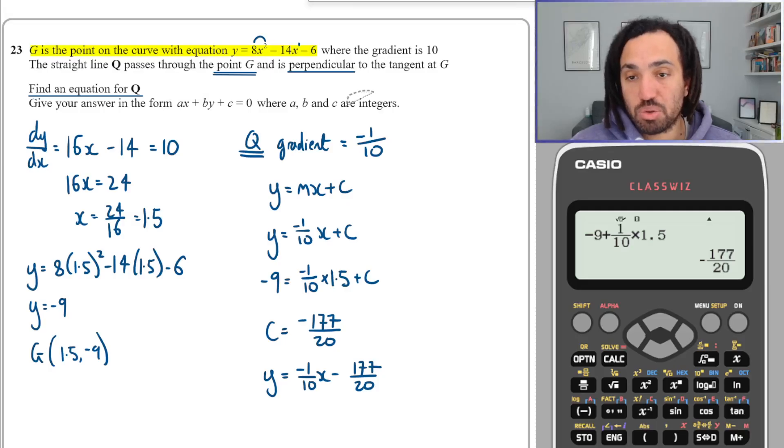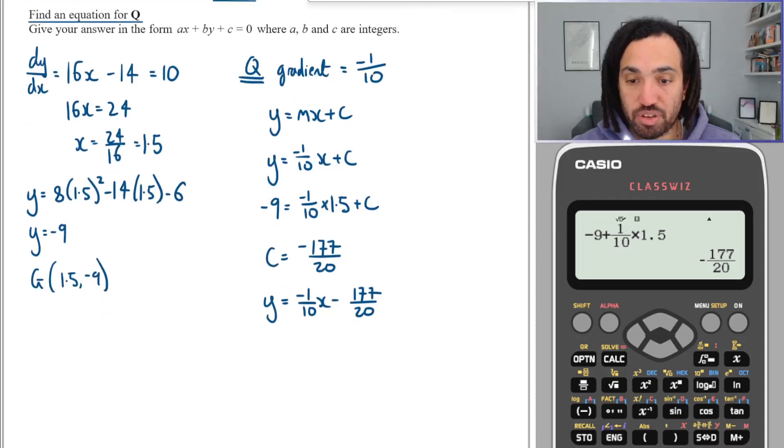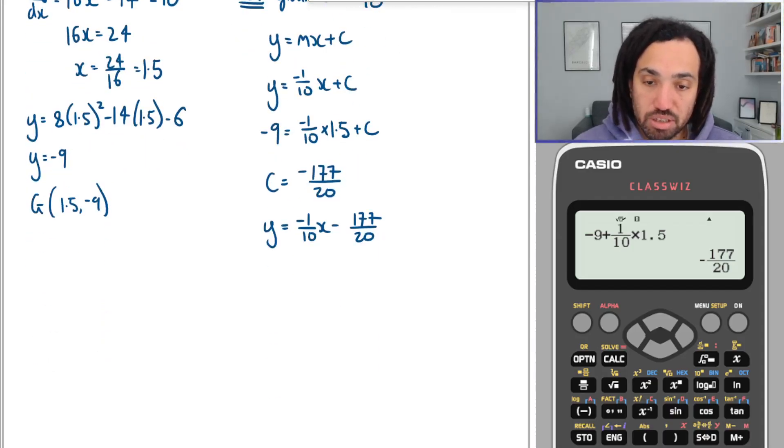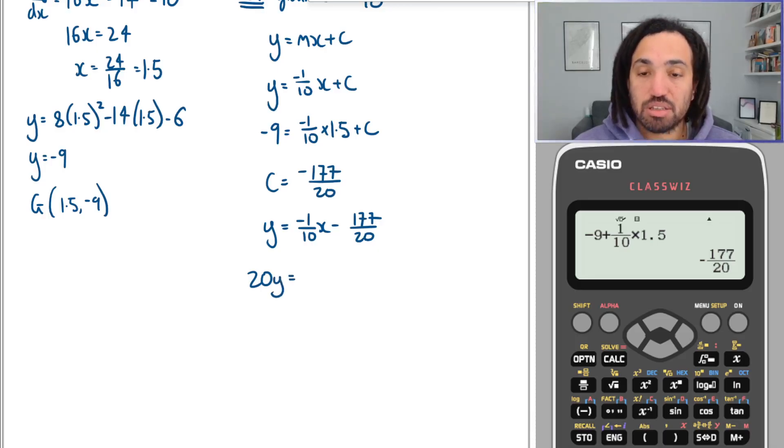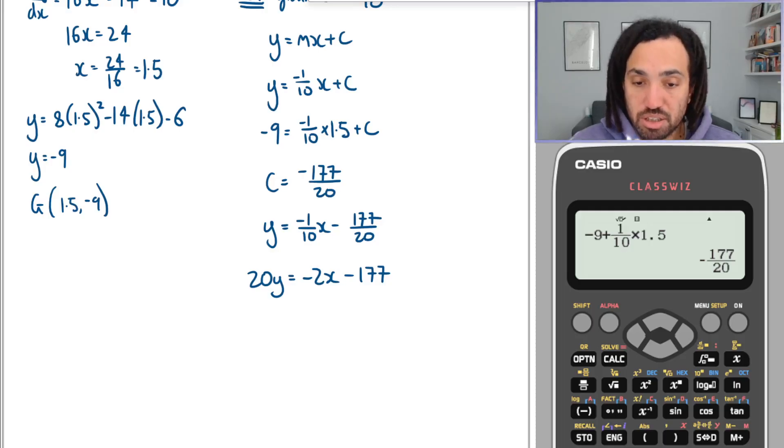So I'm going to times through by 20 here, and that's going to clear both of those denominators. Times by 20 gives me 20y, times by 20, -1/10 gives me -2x, and this gives me -177.